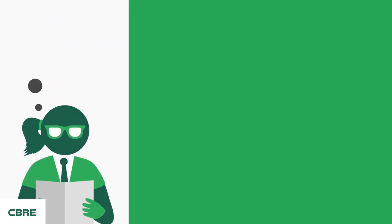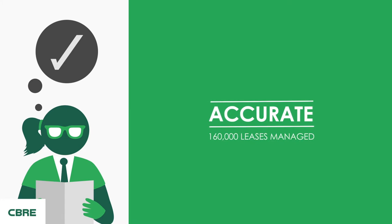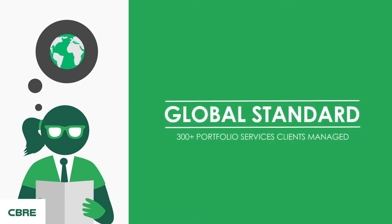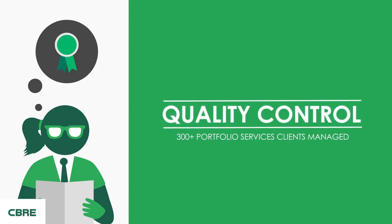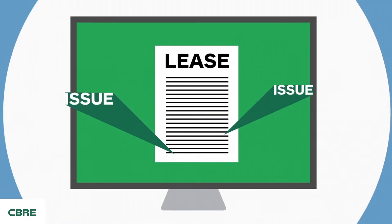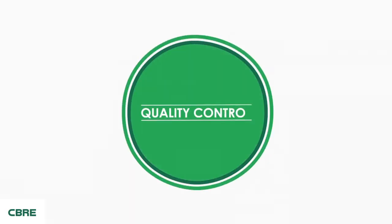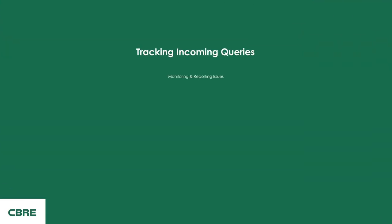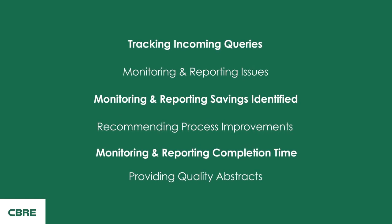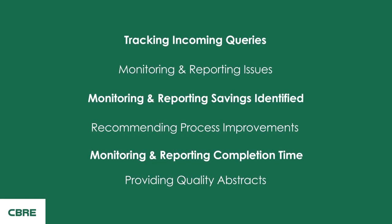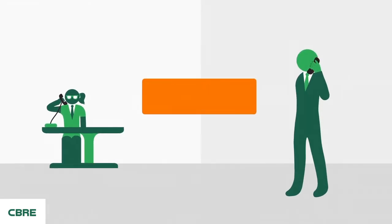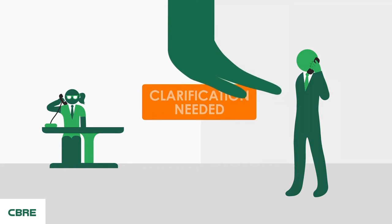Our goal is to make sure the abstract is accurate, has an efficient turnaround time, and meets a global standard — the highest standard for quality control. But what if there is a discrepancy? All issues are tracked and sent to quality control. We track data issues and turnaround times as key performance indicators, which we will review with you on a regular basis. Our team will reach out to you and the transaction manager immediately to clarify any discrepancies.